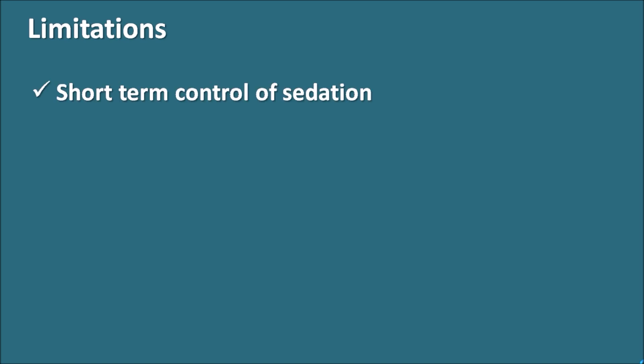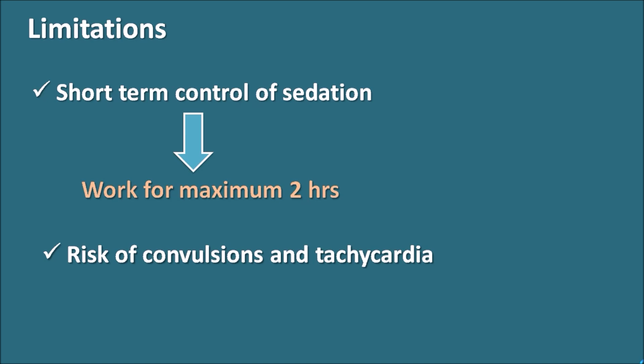What are the limitations? One important limitation of Flumazenil is the short-term control of sedation. When the Flumazenil injection is given it can work for a maximum of two hours. After two hours, if sedation reappears, another Flumazenil dose should be given. Another important limitation of Flumazenil is the risk of convulsions. Flumazenil acts as an antagonist to the benzodiazepine receptors which normally decrease convulsions, so when Flumazenil is used it may increase the risk of convulsions. In patients already having risk factors for convulsions, Flumazenil may increase convulsions and even cause death.